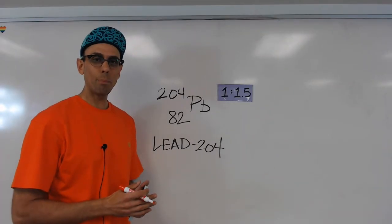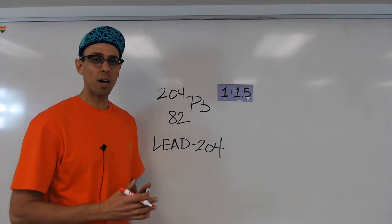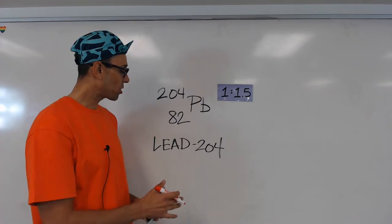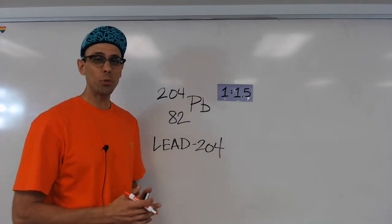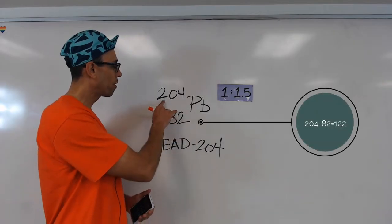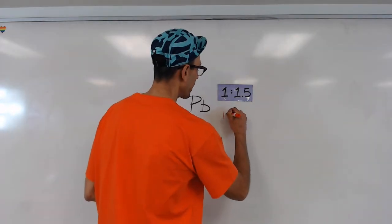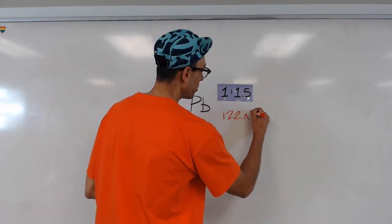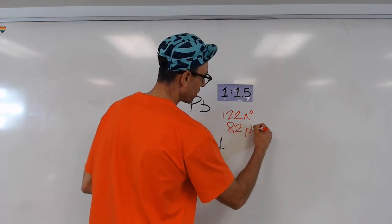So now let's try an example with a bigger atom. Lead has 82 protons, and this particular isotope, lead-204, has 122 neutrons. Now again, we can figure that out by subtracting our atomic number from our mass number. So again, we have 122 neutrons compared to 82 protons.